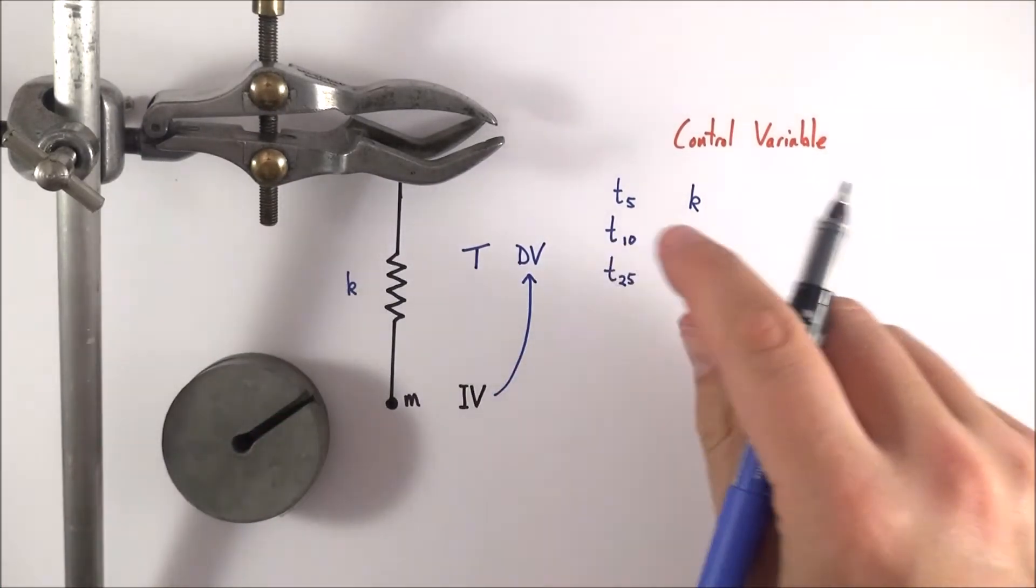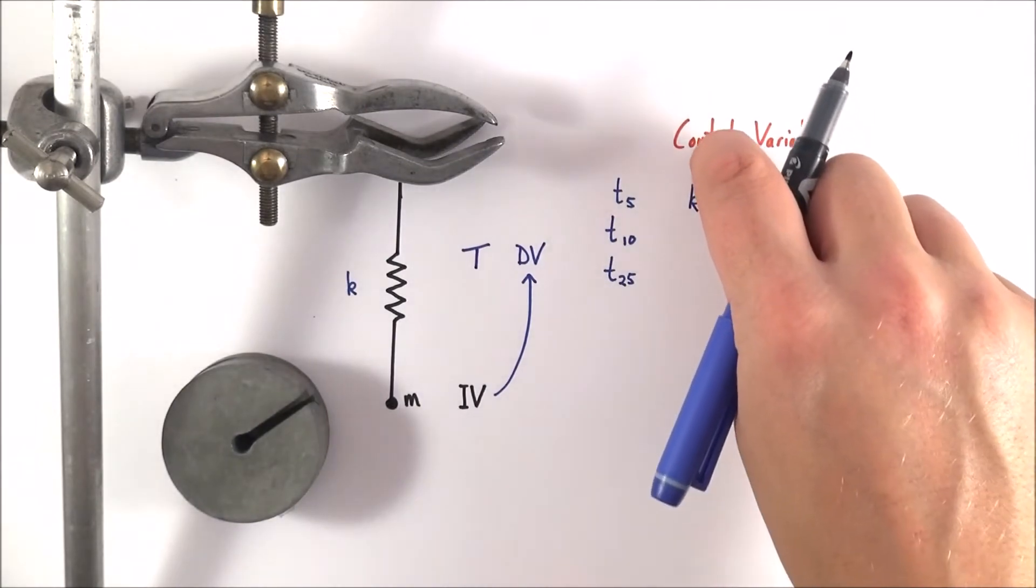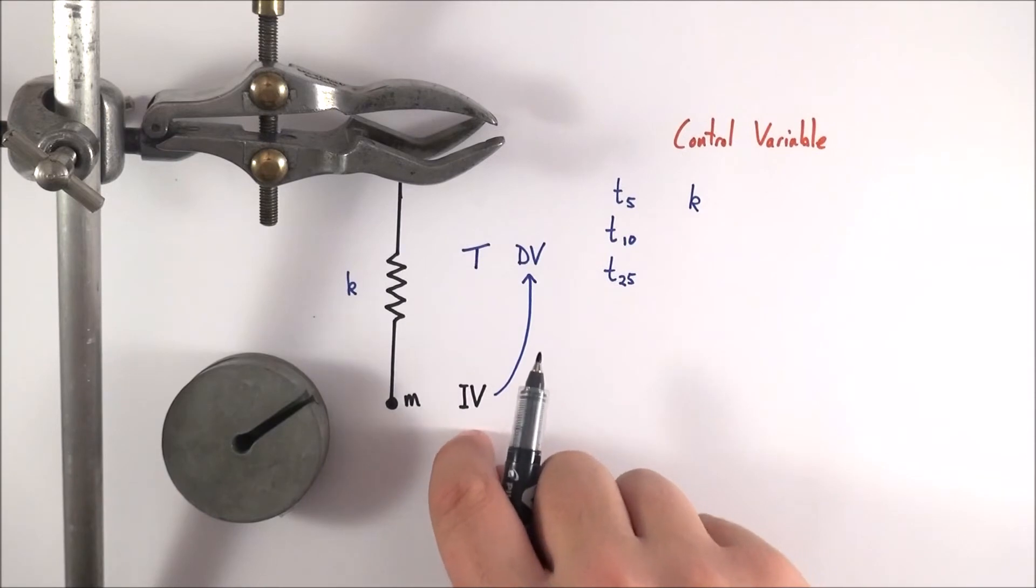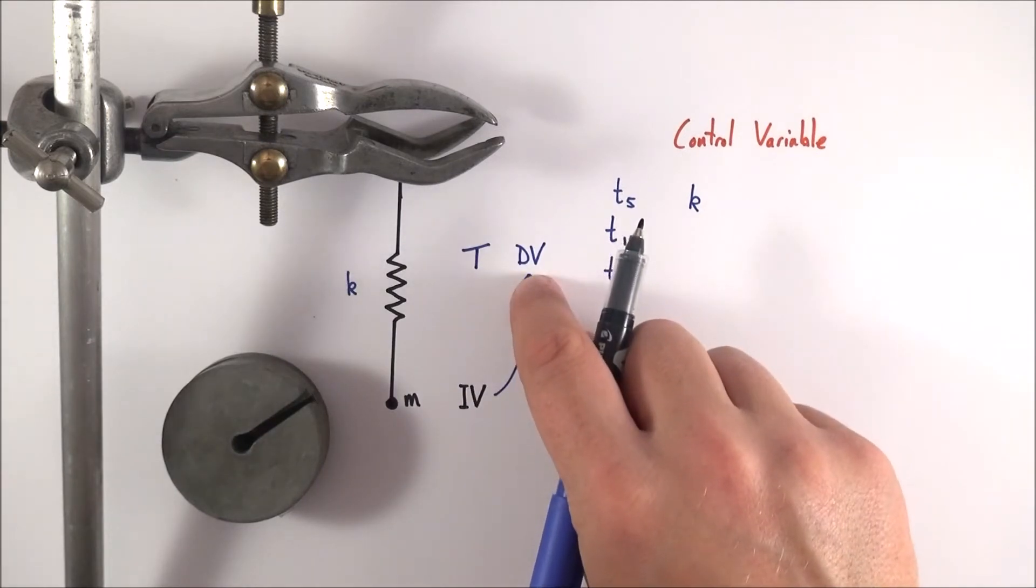And if we control these control variables that means we've got a higher chance of finding that it's only this independent variable that we've decided to change which is causing the dependent variable to then change.